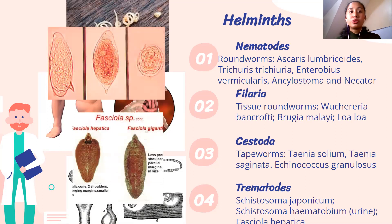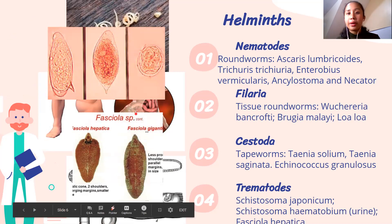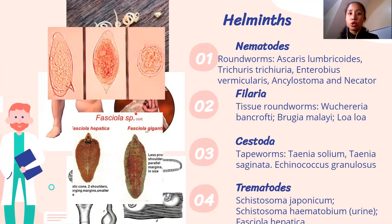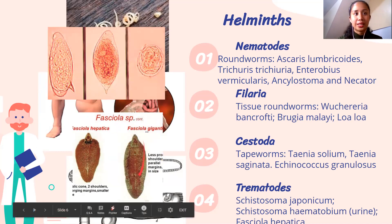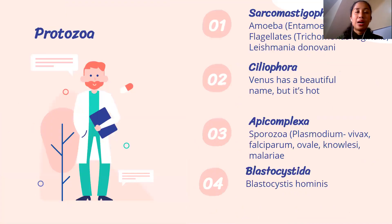Trematodes are also flat — platyhelminthes, same family as tapeworms — but they do not have proglotids or sections. We have Schistosoma japonicum and hematobium. To find Schistosoma hematobium, the specimen is urine — it's called hematobium because one symptom is hematuria, blood in the urine. We also have Fasciola hepatica and Fasciola gigantica, which are flat but large — about 1 cm — visible macroscopically.